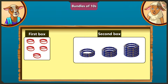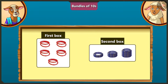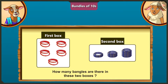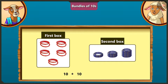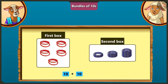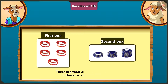Oh wow! Absolutely right! Now tell me this, how many bangles are there in these two boxes? There are 10 bangles in the first box and there are also 10 bangles in the second box. So if we add 10 and 10, there will be 20. So there are total 20 bangles in these two boxes.